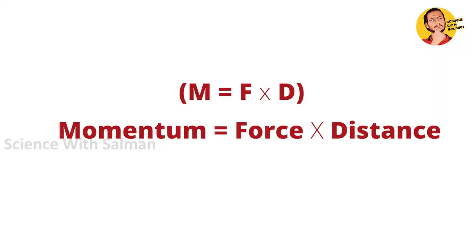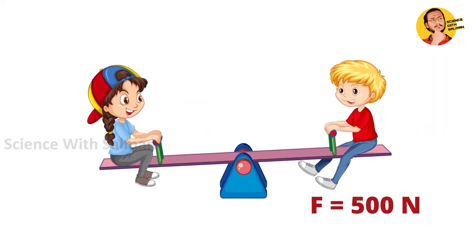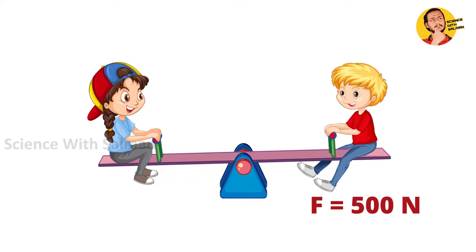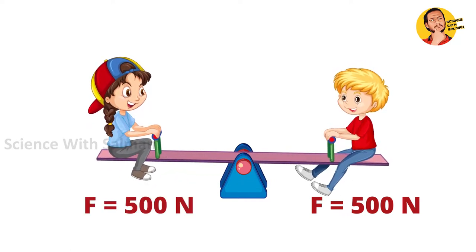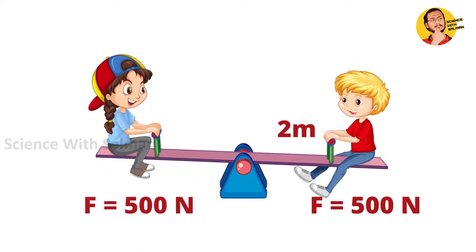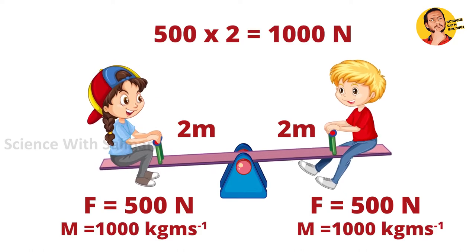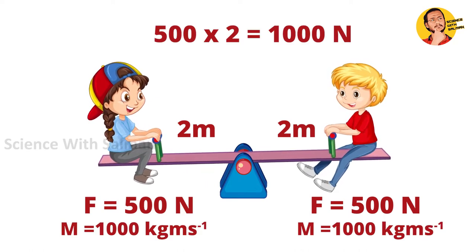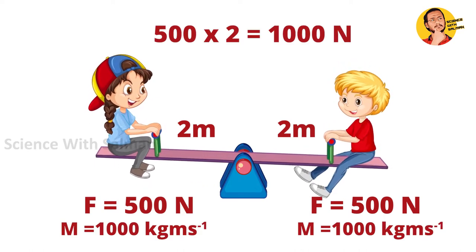Now we can look at another form: Force into distance is equal to moment, or torque. If you have 500 N force and the left side lever is 2 meters, then 500 N into 2 meters gives 1000 N·m. So the right side lever will balance this moment.